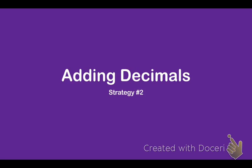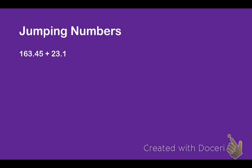Let's go ahead and take a look at strategy number two. We're going to use the jump strategy. We're going to be jumping numbers. What I'm going to do is I'm going to start with one of my numbers. In this case, I'm going to start with the number 163.45 because it's just the bigger number. I'm going to make myself a number line. So I'm going to start at 163.45.